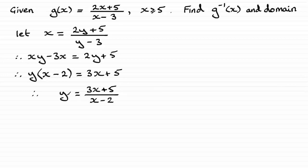And now that I've got what y is I can replace that y with the inverse function of g, g to the minus 1 of x, and that's going to be 3x plus 5 all over x minus 2.